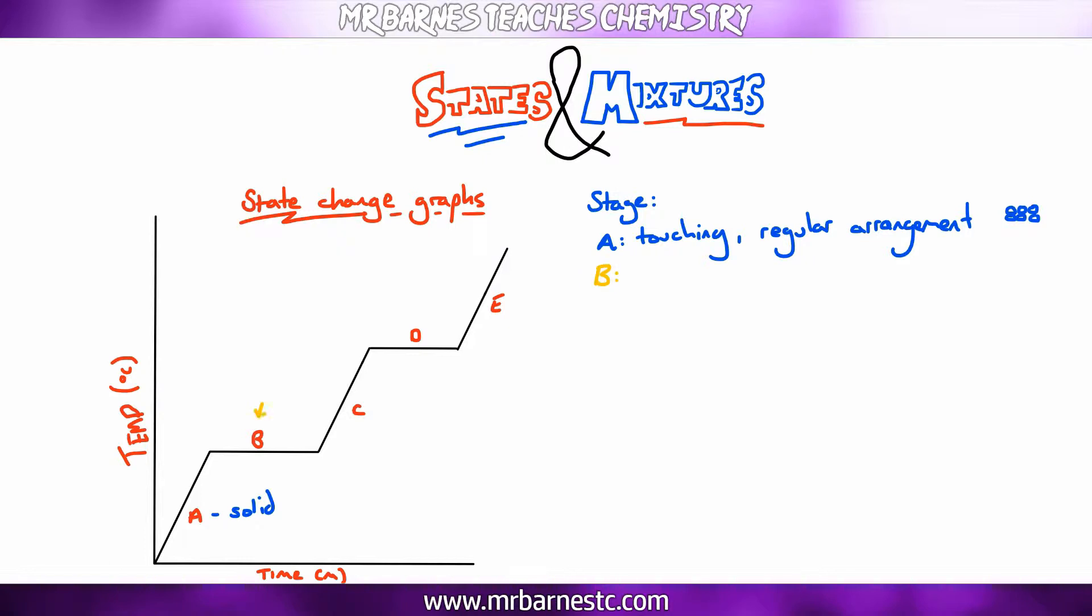At B, that's where melting is occurring. So you'll notice here that the temperature has not increased. It stayed the same. The reason for that is the energy is not being used to increase the temperature. It's being used to weaken the intermolecular forces, the forces between the molecules.